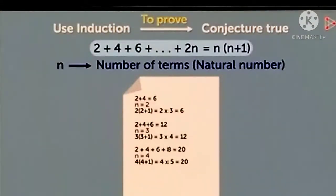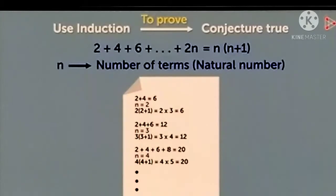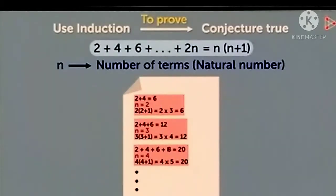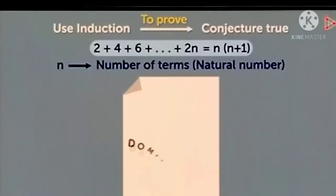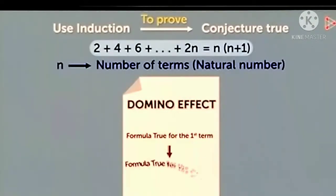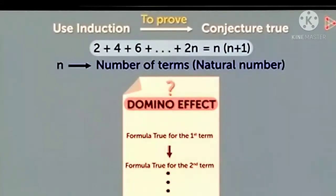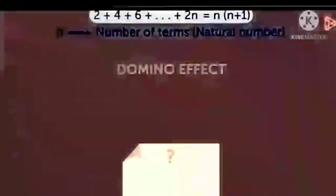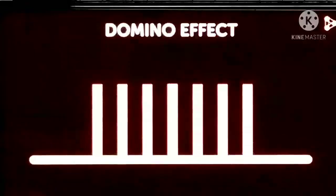But if you take one by one all the values in place of n, it will be too hectic. So to overcome this type of problem, we go with the domino effect. That means you have to first take the first term to prove the formula, then the second term, and so on. Now, what is the domino effect that we want to check?